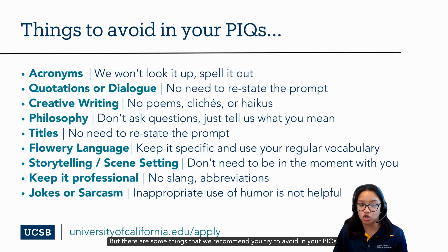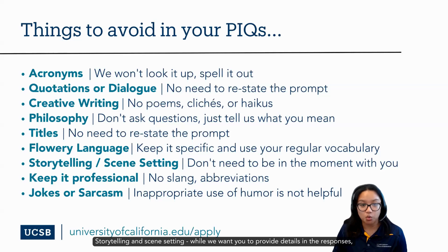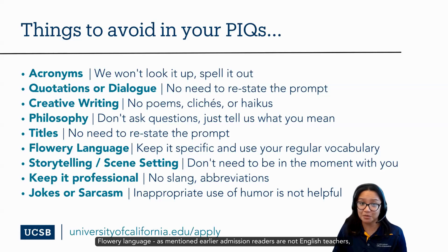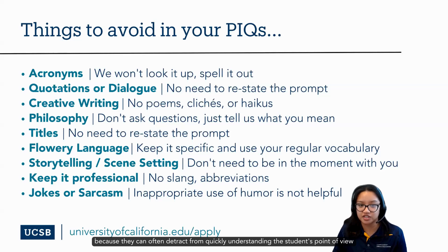There are some things we recommend you try to avoid in your PIQs. It is recommended that you do not include things like creative writing or quotes — we want to know your thoughts and your words, not someone else's, and these often do not add value and cost you limited word count. Avoid storytelling and scene setting; while we want you to provide details, those details should be about you and not about setting the scene or providing excessive background information. Also avoid flowery language; admissions readers are not English teachers, so stick to using everyday language. All of these things can detract from quickly understanding the student's point of view in the Personal Insight Question responses.